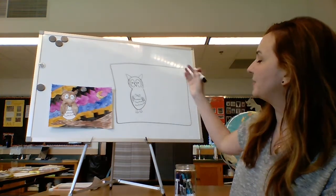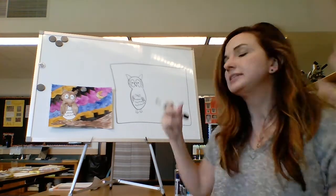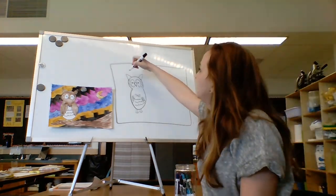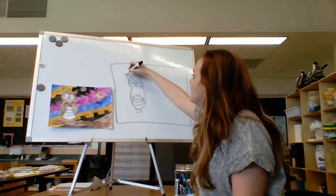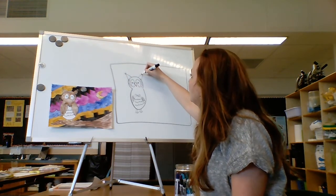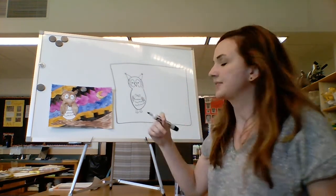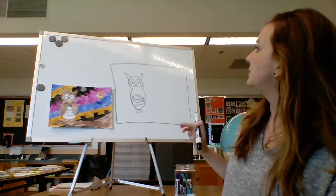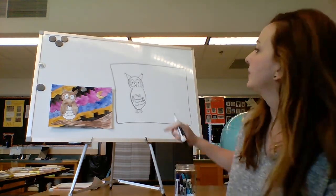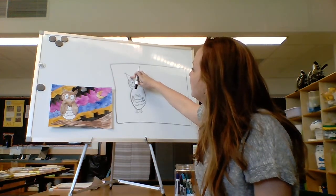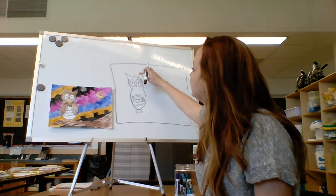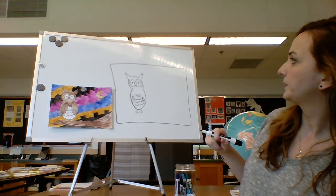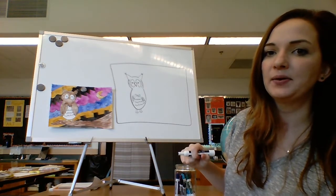Now I've got my owl. I'm going to add a little texture to his ears to make them look less cat-like. On the top of each ear, I'm going to draw three little lines — one, two, three — so they've got those little tufts of hair. Then I'm going to take my eraser and erase those lines that cut across the ears. Now I've got my little owl.